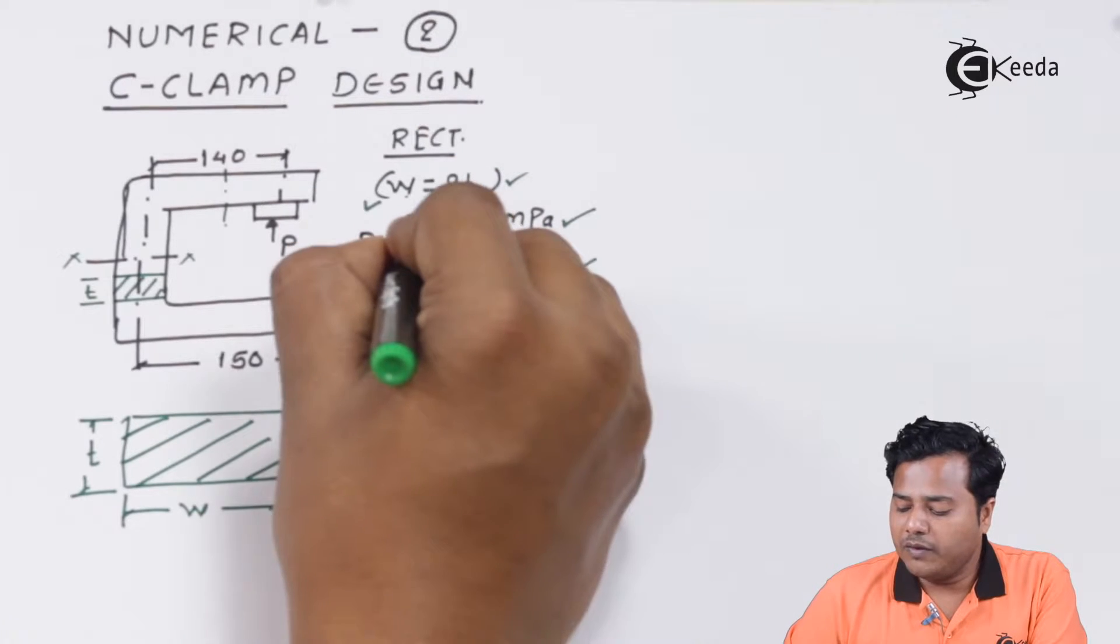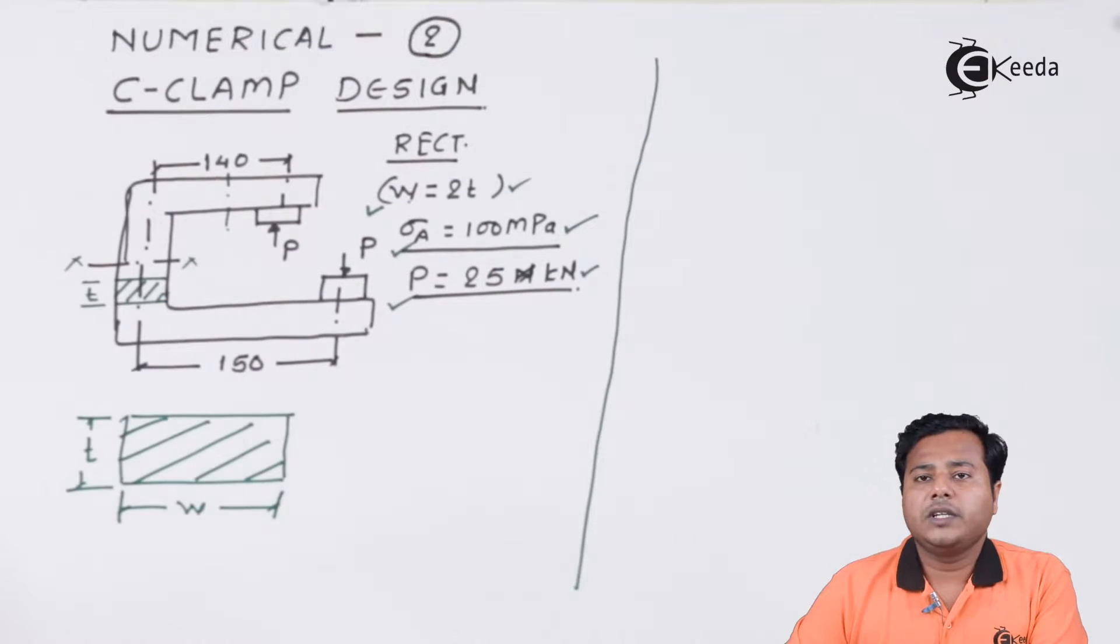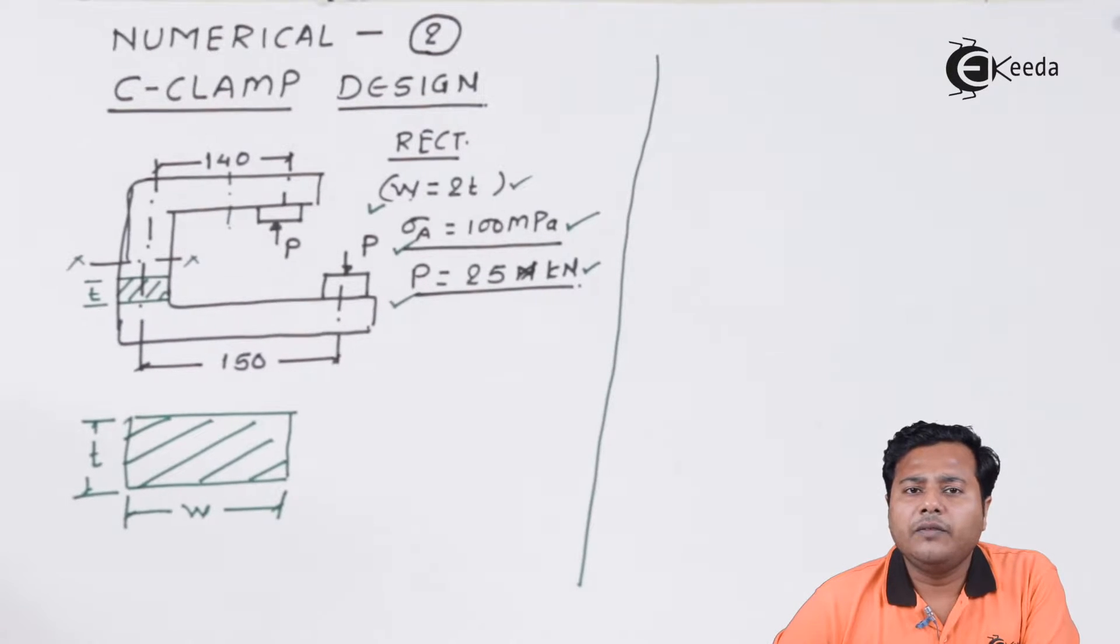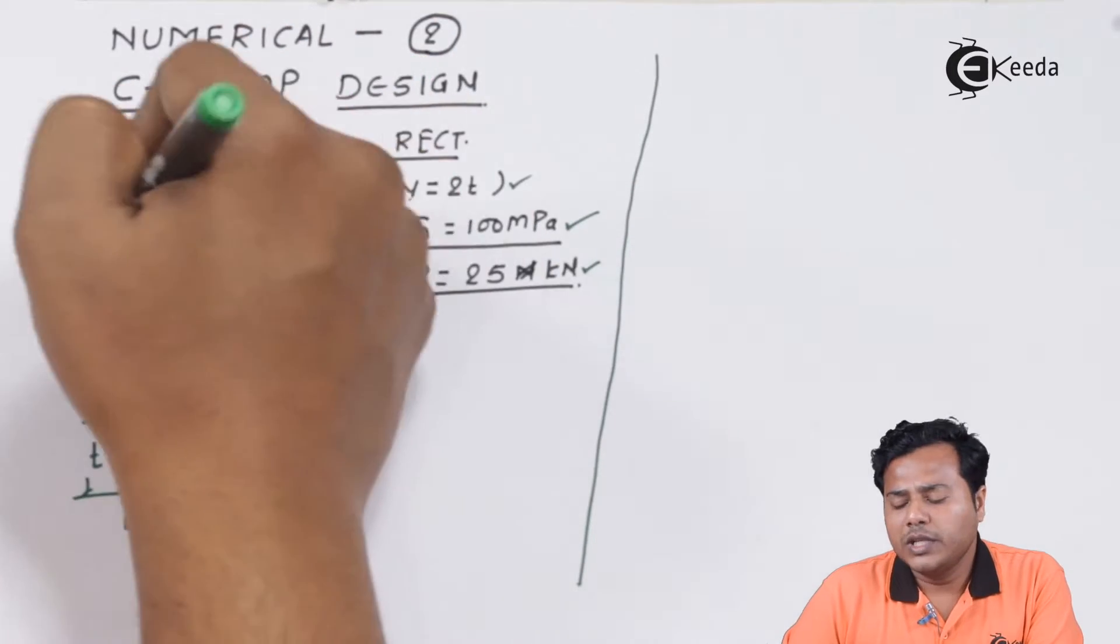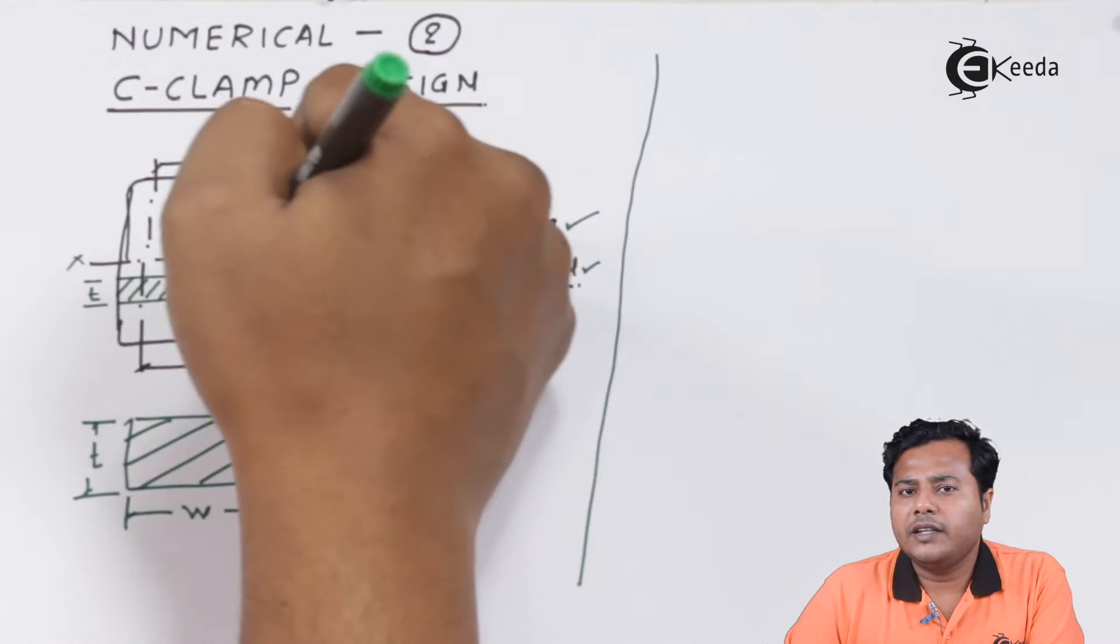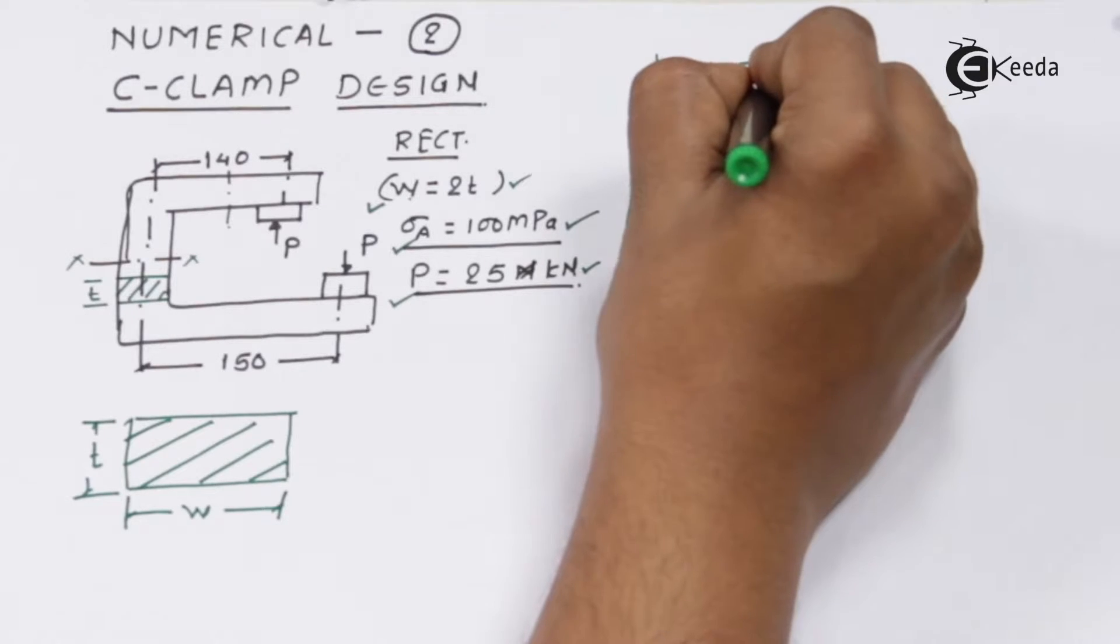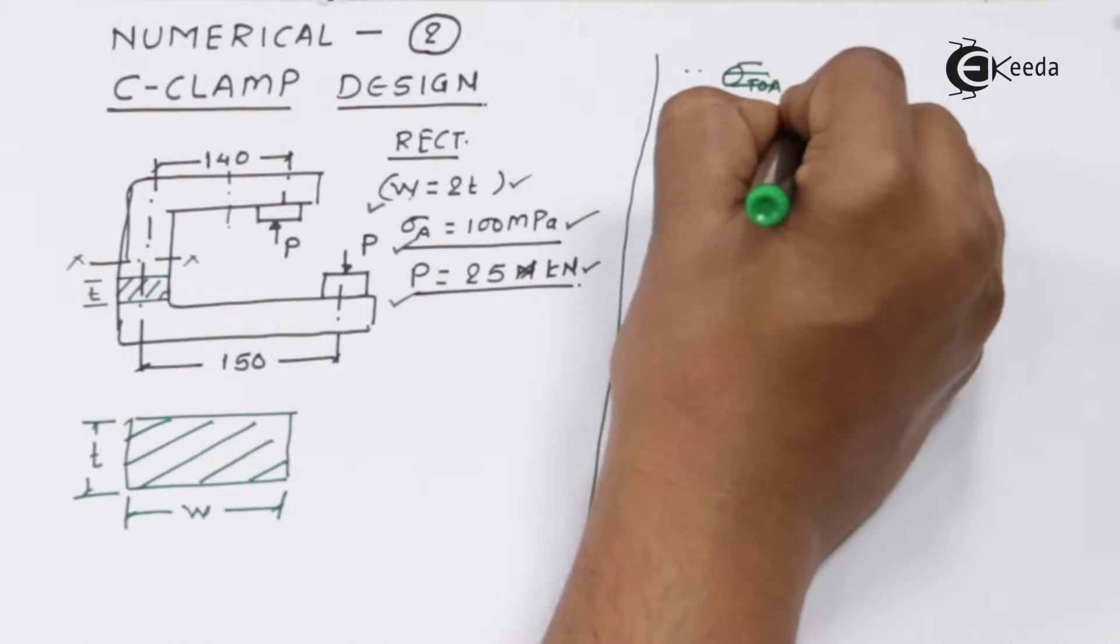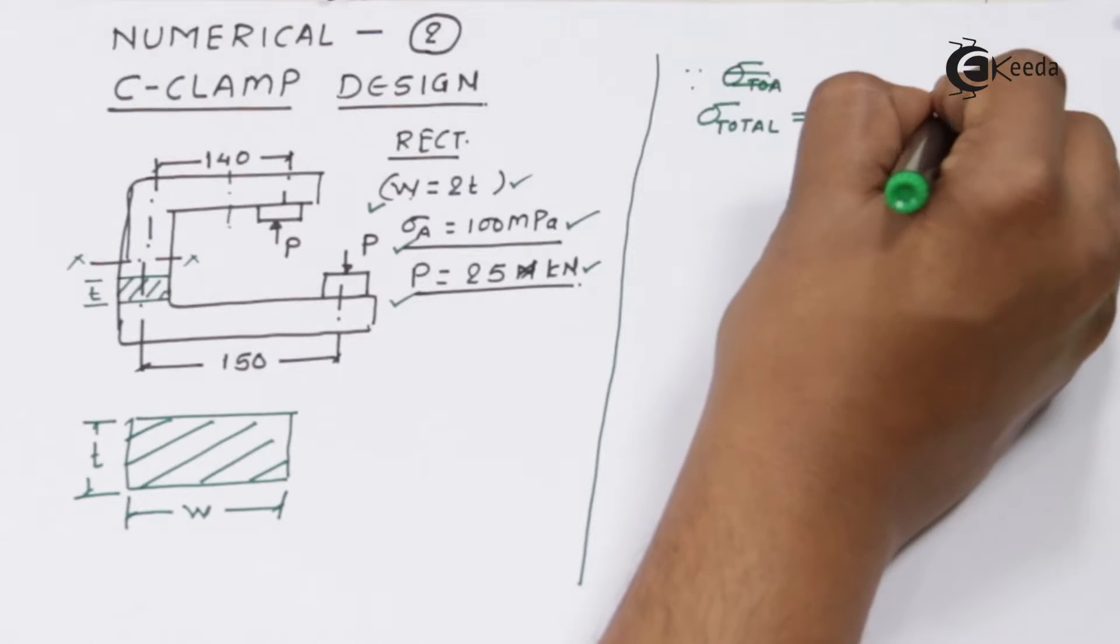We know that in curved beams, they may fail under the influence of bending stresses as well as direct stresses. C-clamp is a simple case as compared to crane hooks. The total stress that can act on this particular C-frame can be given by bending stress as well as the direct stress.